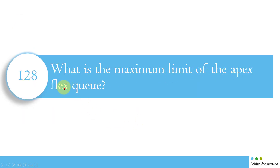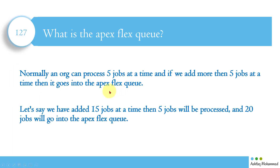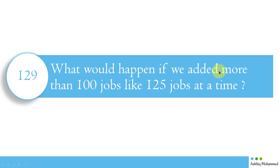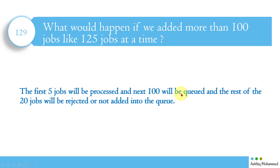What is the maximum limit of the Apex Flex Queue? The Apex Flex Queue can hold up to 100 jobs at a time. For example, if you submit 105 jobs, 5 will be processing and 100 will be in the flex queue. If you submit 125 jobs, the first 5 are processed, the next 100 are queued, and the remaining 20 will be rejected and not added to the queue.